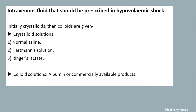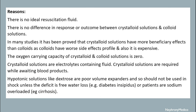Intravenous fluids prescribed in hypovolemic shock include initially crystalloids and then colloids. Crystalloids include normal saline, Hartmann's solution, and Ringer's lactate. Colloid solutions include albumin or commercially available products. There is no ideal resuscitation fluid, and no significant difference in outcome between crystalloids and colloid solutions.